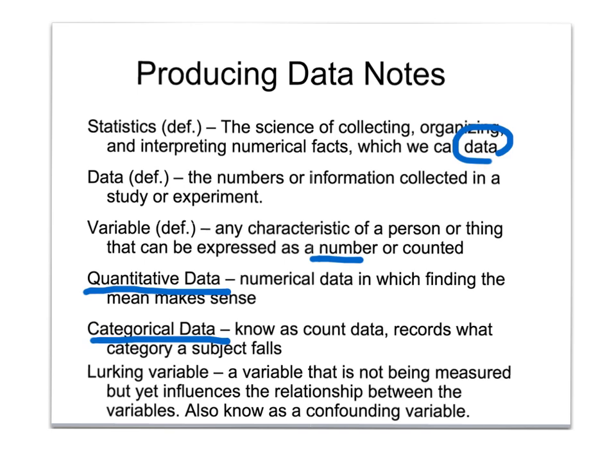The terminology you need to become familiar with is a lurking variable, also known as a confounding variable. This is something that occurs in our experiment or data that may be influencing our results that we are not aware of. We always have to look for some sort of variable that may be influencing what our results are.